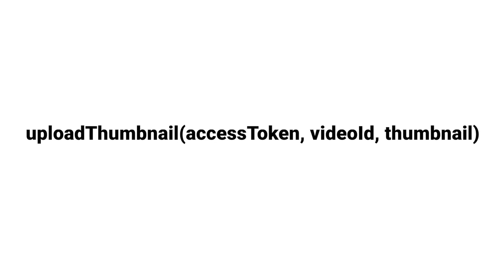Then we need another API for uploading the thumbnail of the video. The client will send: access token (to identify the user), video ID (of the video for which we are uploading the thumbnail), and the thumbnail image file. So these were the APIs we needed.